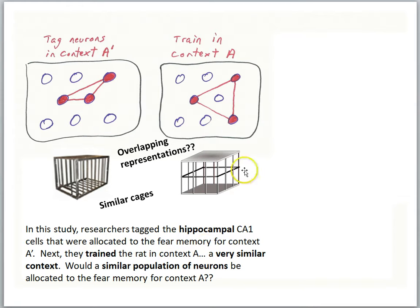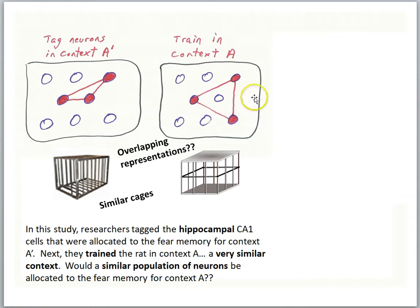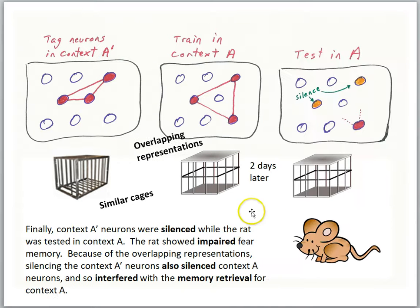Next, they trained the rat in context A, a very similar context. The question was: would a similar population of neurons be allocated to the fear memory for context A? Because these are very similar cages, would a very similar overlapping population of cells be allocated to the fear for context A? The overlap is shown by having two cells be part of the fear memory for context A, but those same cells also being part of the fear memory for context A'. Context A' neurons were then silenced while the rat was tested in context A, and the rat showed impaired fear memory. Because of the overlapping representations, silencing the context A' neurons also silenced context A neurons and interfered with memory retrieval for context A.